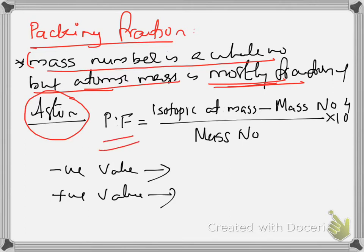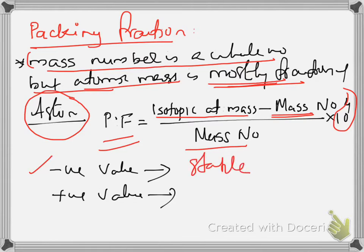Packing fraction can be calculated using the equation: isotopic atomic mass (the real atomic mass given in the periodic table) minus mass number (total number of protons and neutrons), divided by mass number, multiplied by 10 to the power of 4. If the value of packing fraction is negative, the nucleus is found to be stable. If it is positive, the nucleus is considered to be unstable.